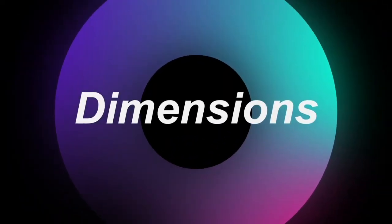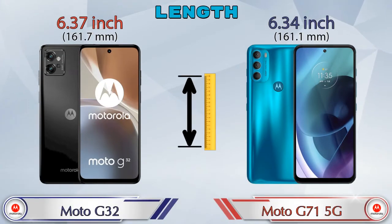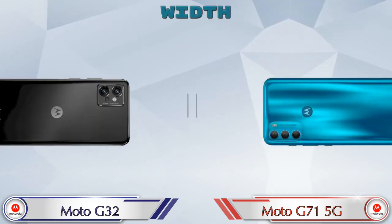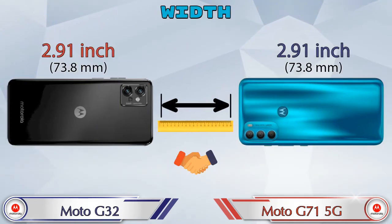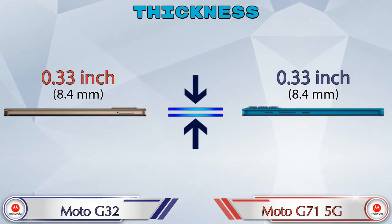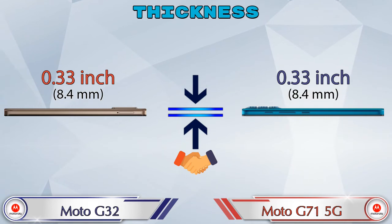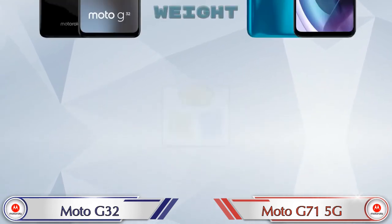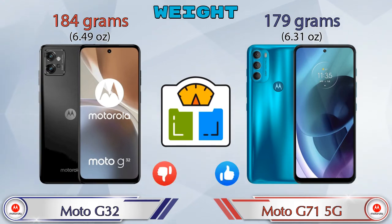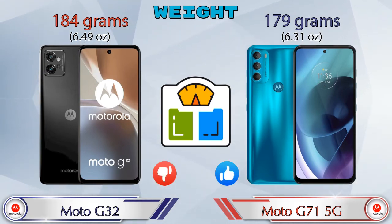Now let's check the details about dimensions. The length of the G32 is 6.37 inches and the G71 5G is 6.34 inches, which is slightly less. The width is the same in both phones at 2.91 inches, and both phones have the same thickness of 0.33 inches. Talking about weight, the G32 is 184 grams and the G71 5G is 179 grams.